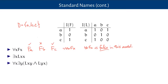Now let's look at 'there is an x such that l(x,x).' This is going to be true if one of its instances is true: l(a,a), l(b,b), or l(c,c). Looking at the table: l(a,a) is true and l(b,b) is true, but l(c,c) is not. Since two of its instances are true, the existential 'there is an x such that l(x,x)' is true.